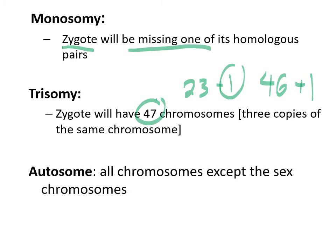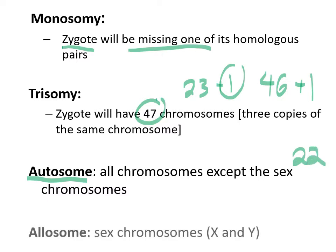A quick definition: an autosome is essentially all of the chromosomes except for the sex chromosomes — that is our 22 pairs. Then we have our one pair of allosomes, or sex chromosomes, giving us our 23 pairs total.